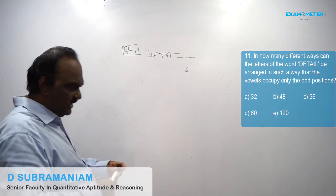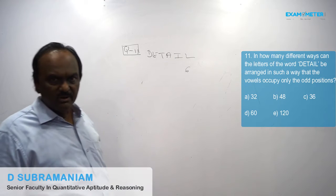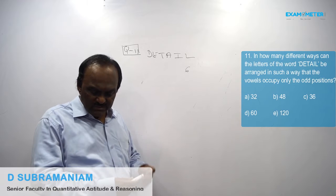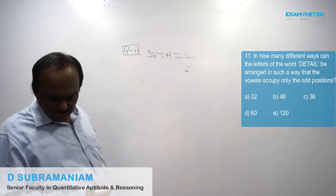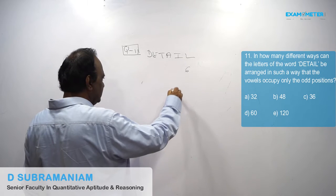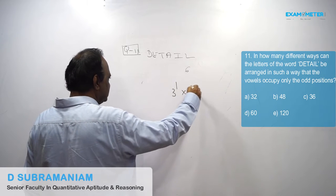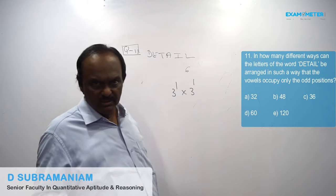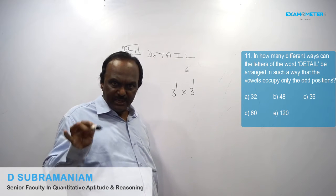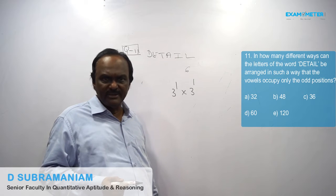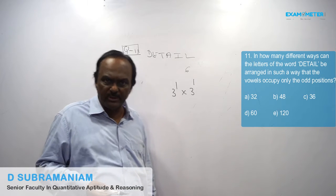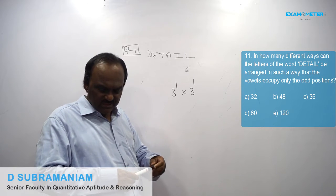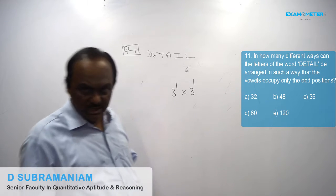In the word DTYPE there are six letters, consisting of three vowels and three consonants. Three vowels can be arranged among themselves in 3! ways and three consonants can be arranged among themselves in 3! ways. Three factorial is six, and six into six is thirty-six. So the answer is thirty-six, that is multiple choice C.